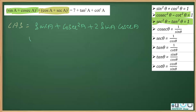Then expanding the second bracket: cos²a plus b² which is sec²a, plus 2 times cos a into sec a. After that I am going to do some rearrangement.